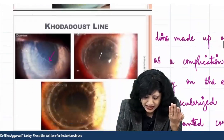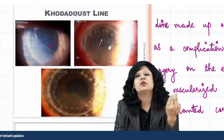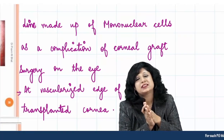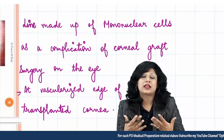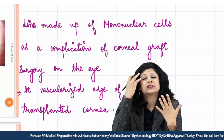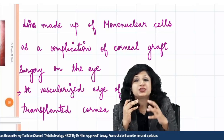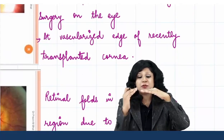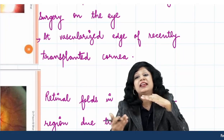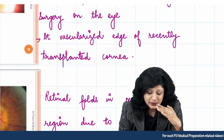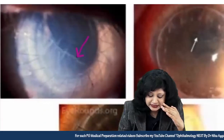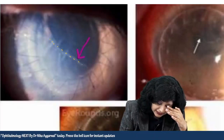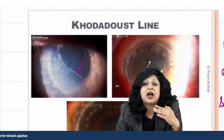Next is the Khodadous line. This line is made up of mononuclear cells, indicating some kind of inflammation. It occurs as a complication of graft rejection in the eye. You can see it at the vascularized edge of the recently transplanted cornea — that line at the vascularized edge of the recently transplanted cornea is the Khodadous line.